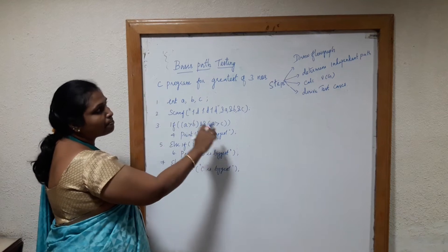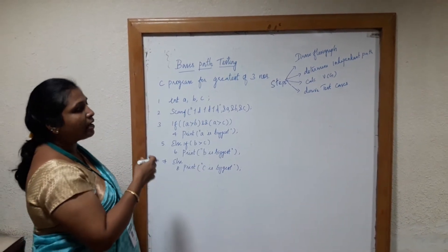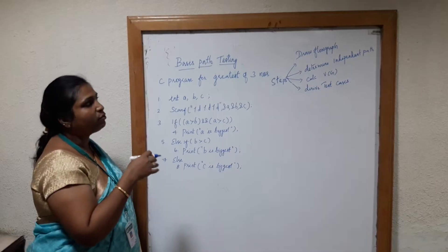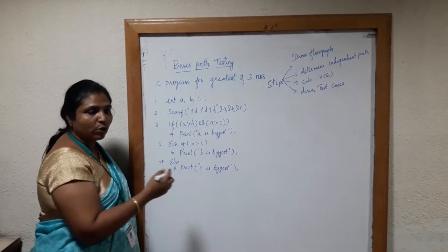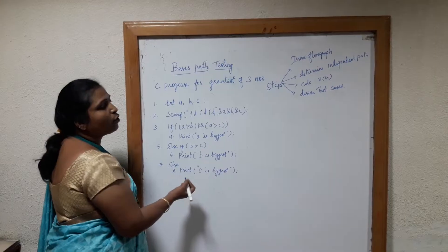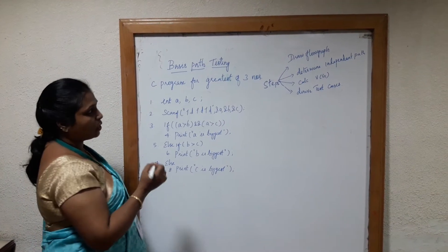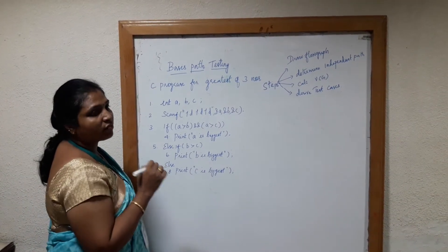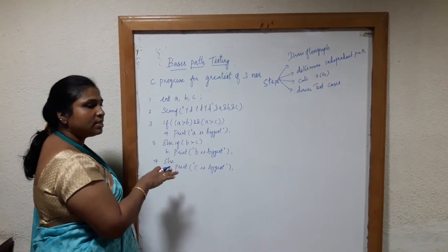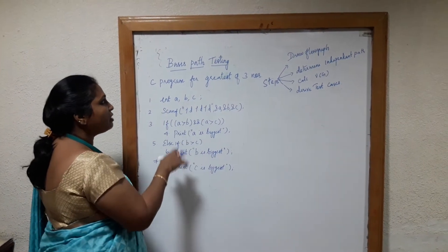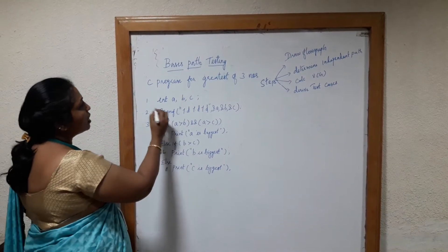The steps include: first, you have to write the C program; then from the program you have to draw the flow graph; then you have to calculate the independent path. Only then can you calculate the cyclomatic complexity. So let us start with the first step — writing the C program for the given scenario of finding the greatest of 3 numbers.